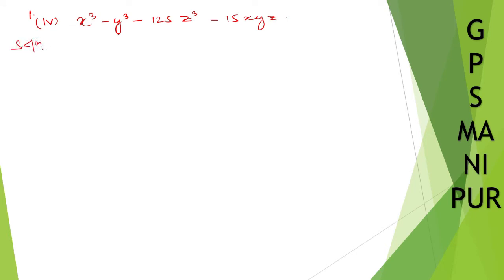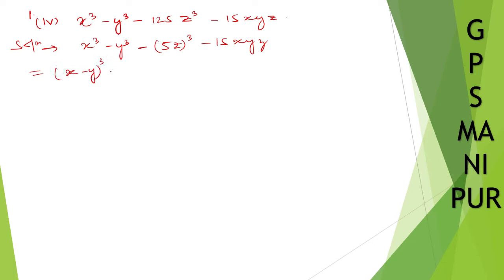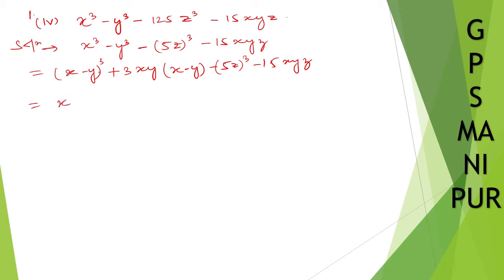Okay, solution. We can write x cube minus y cube minus 125z cube — that is 5z whole cube — minus 15xyz. All the questions use the same formula. For a cube plus b cube, the formula will be a minus b whole cube plus twice ab. So here, a is x minus y and b is minus 5z.